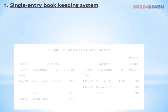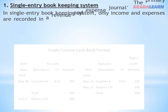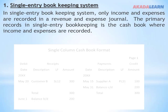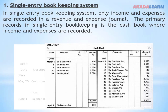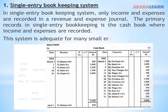Number one: the single entry bookkeeping system. In this system, only income and expenses are recorded in a revenue and expense journal. The primary record in single entry bookkeeping is a cash book where income and expenses are recorded. This kind of bookkeeping will be adequate for many small enterprises, just like small farmers.